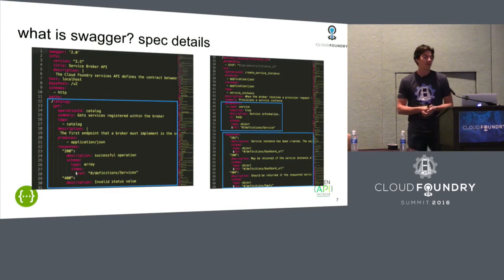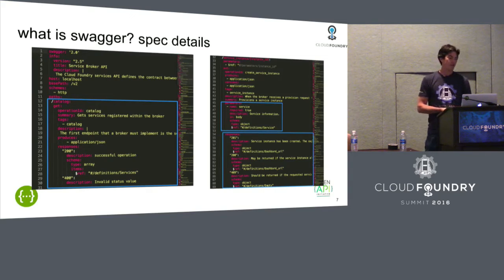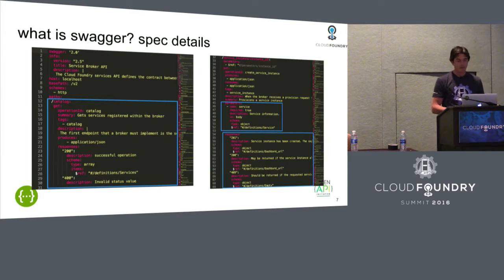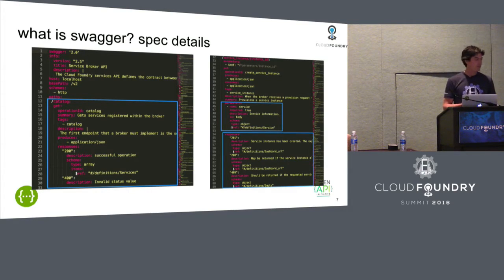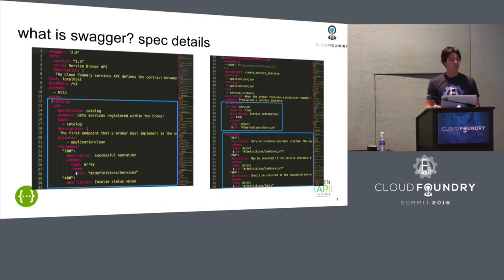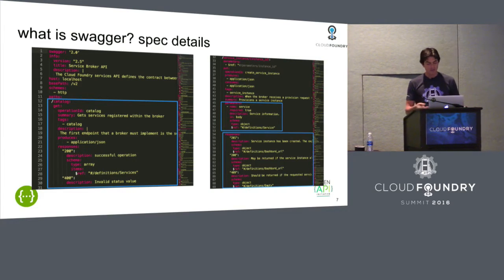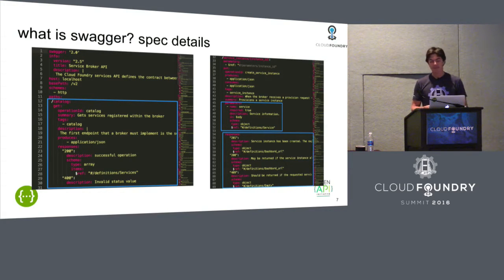Inside, you can see some of the constructs of a Swagger definition or Open API spec definition. There's a path called catalog. There's a summary. It's human understandable. This is not a hard syntax to understand. Here we're saying the description for the operation, what kind of code it produces or format it produces in JSON, a description of the responses. It says it's an array. I don't need to check and see if it's an object or an array — it's telling me exactly what it is.